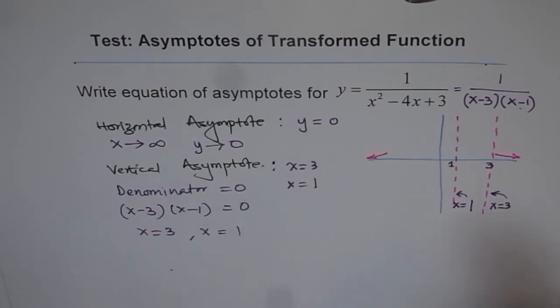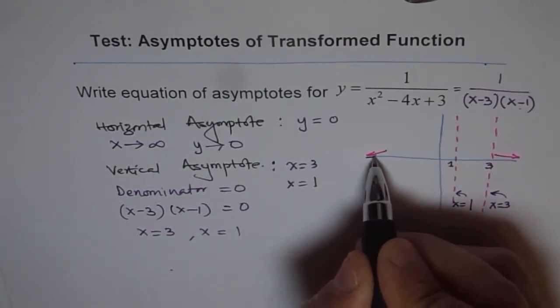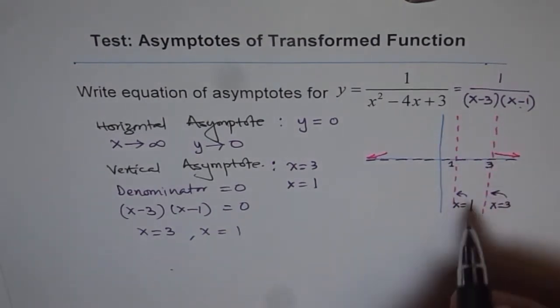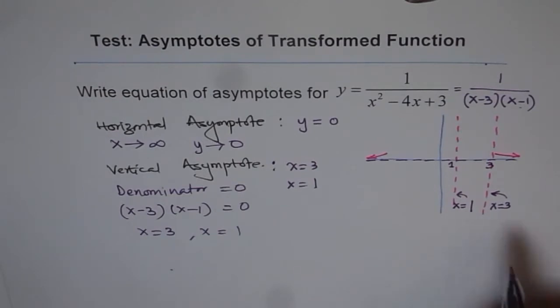We have found the equations for the asymptotes. We have one horizontal asymptote, which is the x-axis (y equals 0), and two vertical asymptotes: x equals 1 and x equals 3.